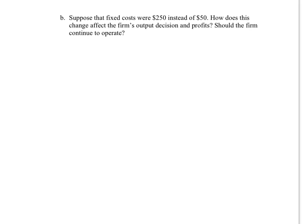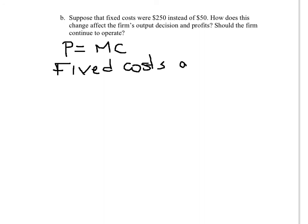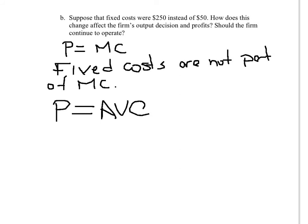Suppose fixed costs were 250 instead of 50. How does this change the firm's output decision and profits? Remember: the decision to produce is based on price equals marginal cost, and fixed costs are not part of marginal cost. So if fixed costs change, the profit-maximizing level of output doesn't change. Similarly, the shutdown decision is based on variable costs, so a change in fixed costs will not change the decision whether to operate.